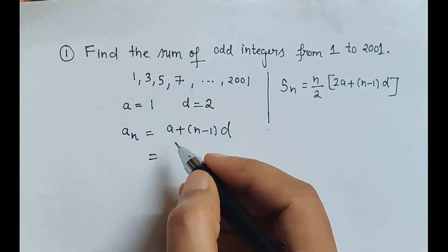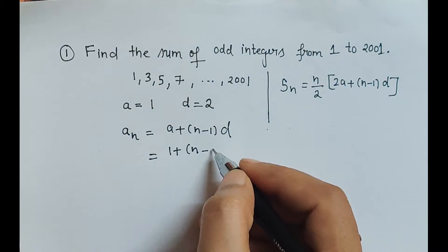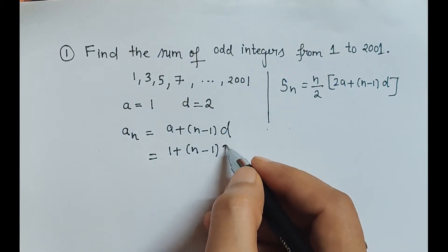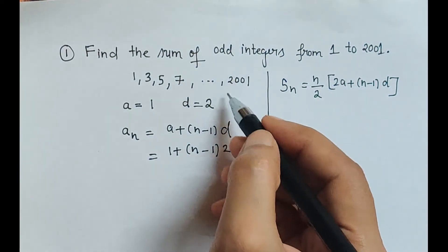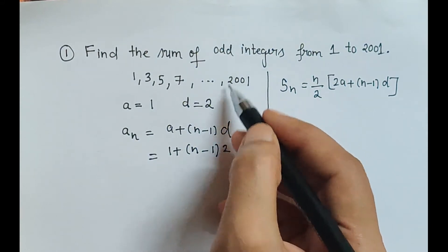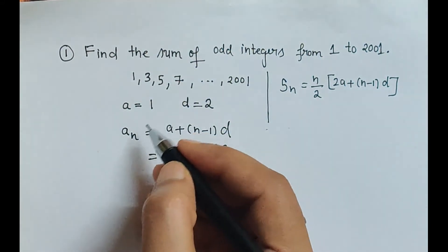So from the sequence, first term is 1, and we are supposed to calculate, and the common difference is 2. And here an stands for the nth term. Here nth term is the last term. We have to find which term is this, that will only give us the number of terms, right?